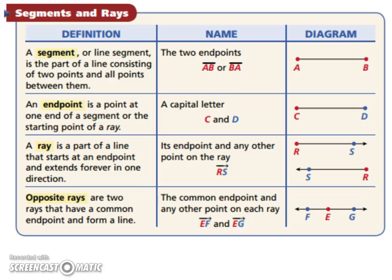An endpoint is a point at one end of a segment, or it's the starting point of a ray. So C and D are endpoints in this diagram. In the diagram below, it's the starting point of a ray, and R happens to be the endpoint.